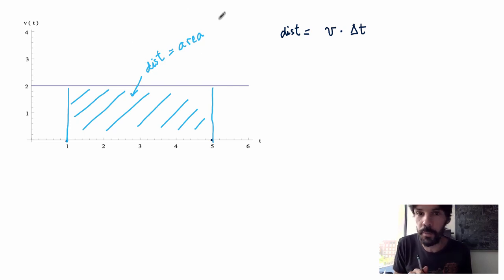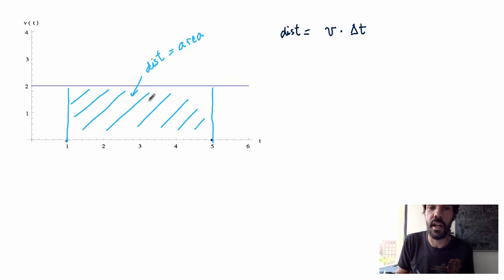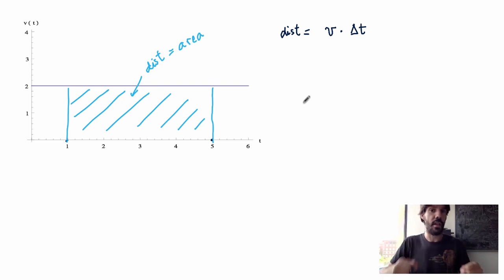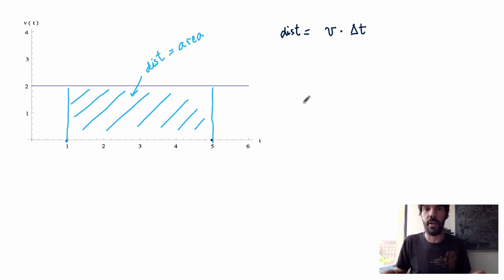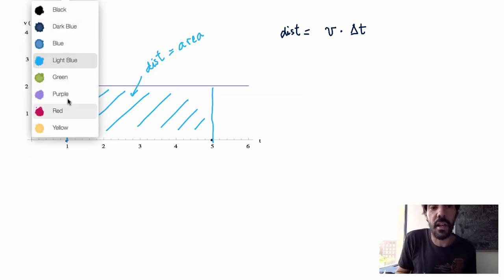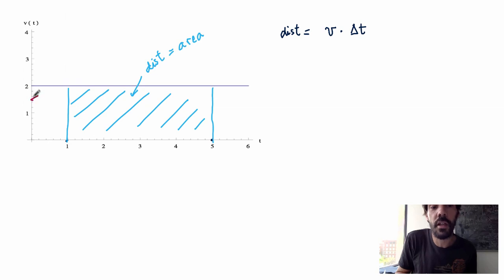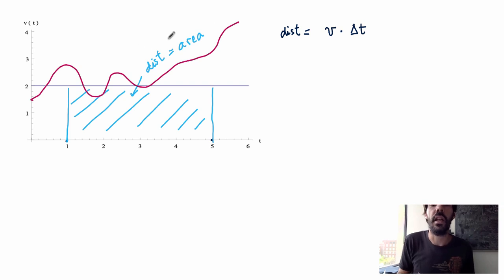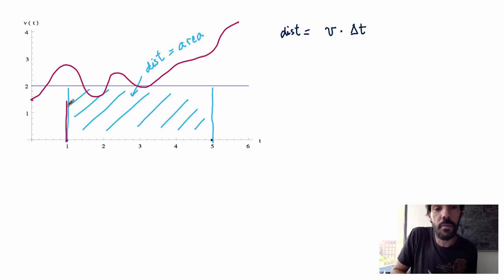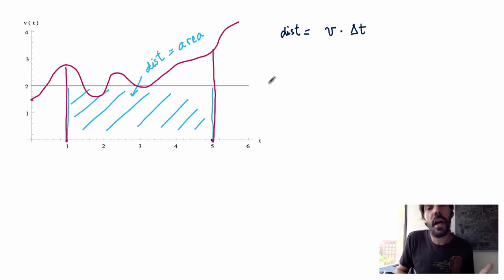This connection is extremely important, just as was the connection between derivatives and tangent lines, and we'll study that in more detail in the next few videos. Now let's look at the more complicated case. Suppose I'm driving my car but I'm not on cruise control anymore — I pass someone, so I accelerate, then decelerate, and so on. My velocity function is not a horizontal line anymore. But I still want to calculate the distance covered between 1 hour and 5 hours.